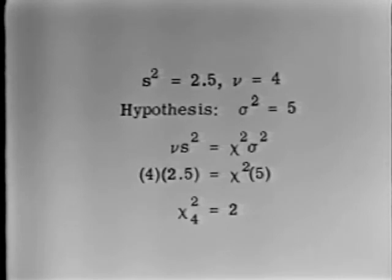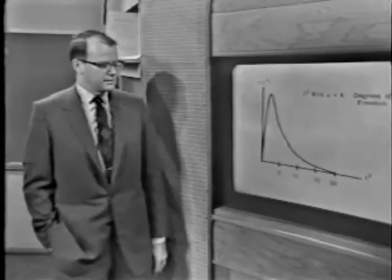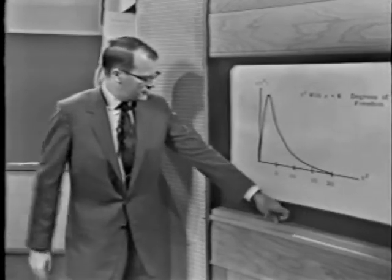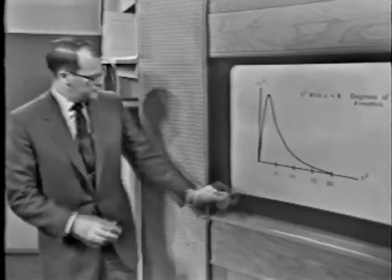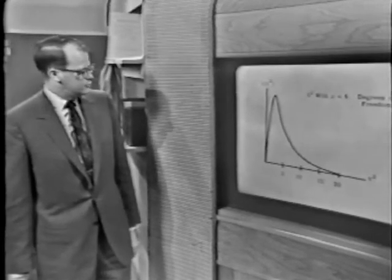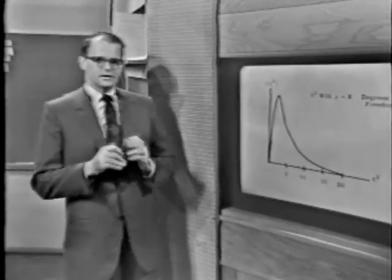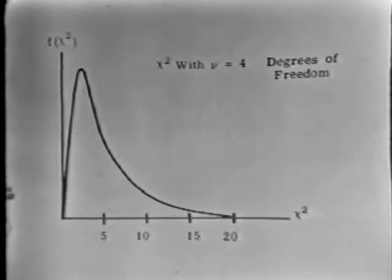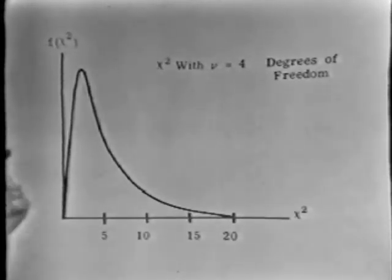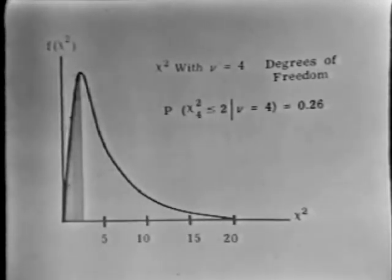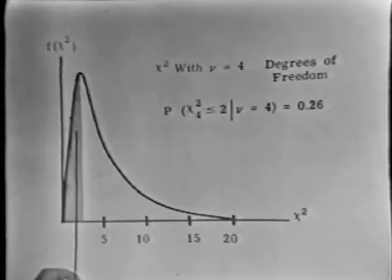Let's look at a chi-square distribution with four degrees of freedom. It's a skewed curve that would balance at four. We observed a value of chi-square with four degrees of freedom equal to two. Our problem now is determining the probability of finding a value of chi-square less than or equal to two — we are determining the area under the curve from zero to two.